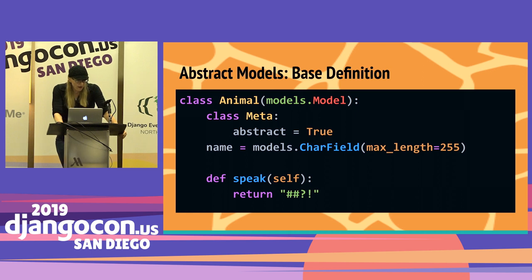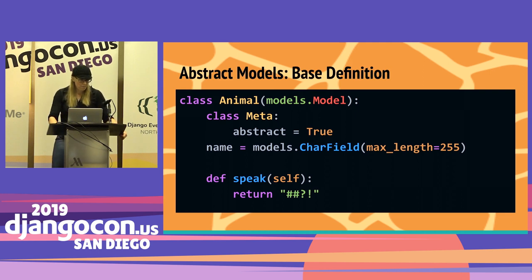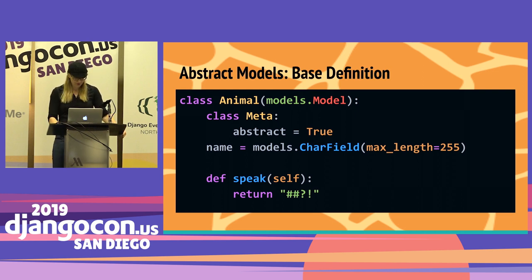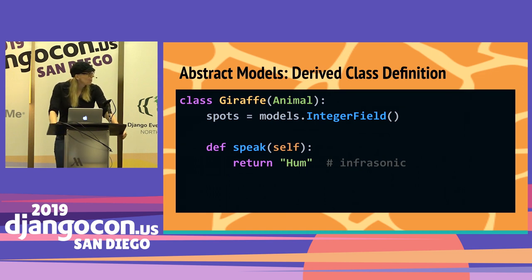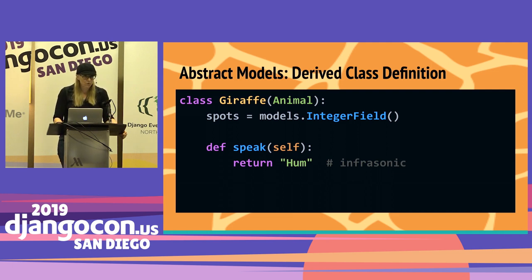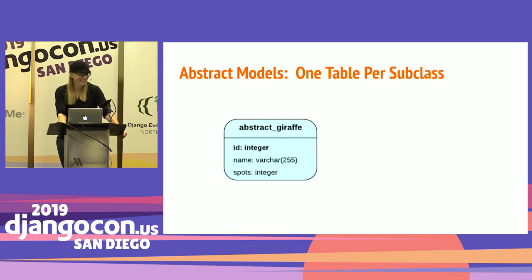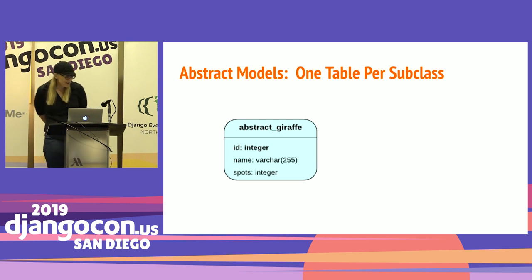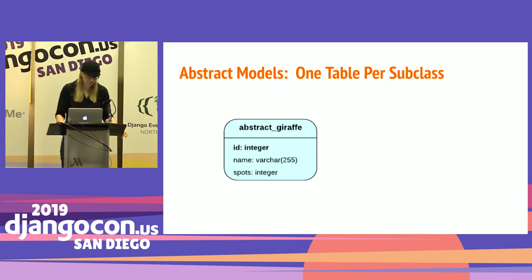In Django, we have an animal parent class that subclasses model, with a name field and a method for speak that returns gibberish. We've overridden the meta class definition to set abstract to true. Giraffe subclasses animal — we add a field for the number of spots the giraffe has, and we override speak to return 'hum', because that's what giraffes do. The ERD diagram shows an abstract giraffe table with an integer auto-incremented ID, the name field from the parent animal, and the spots count from the giraffe class.